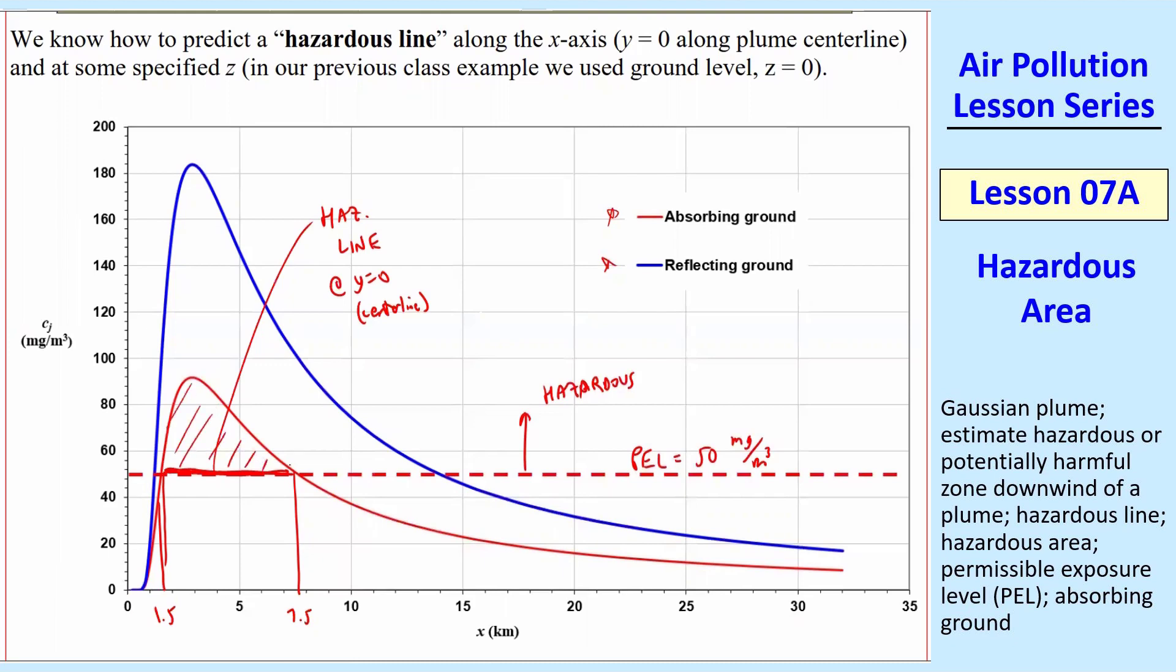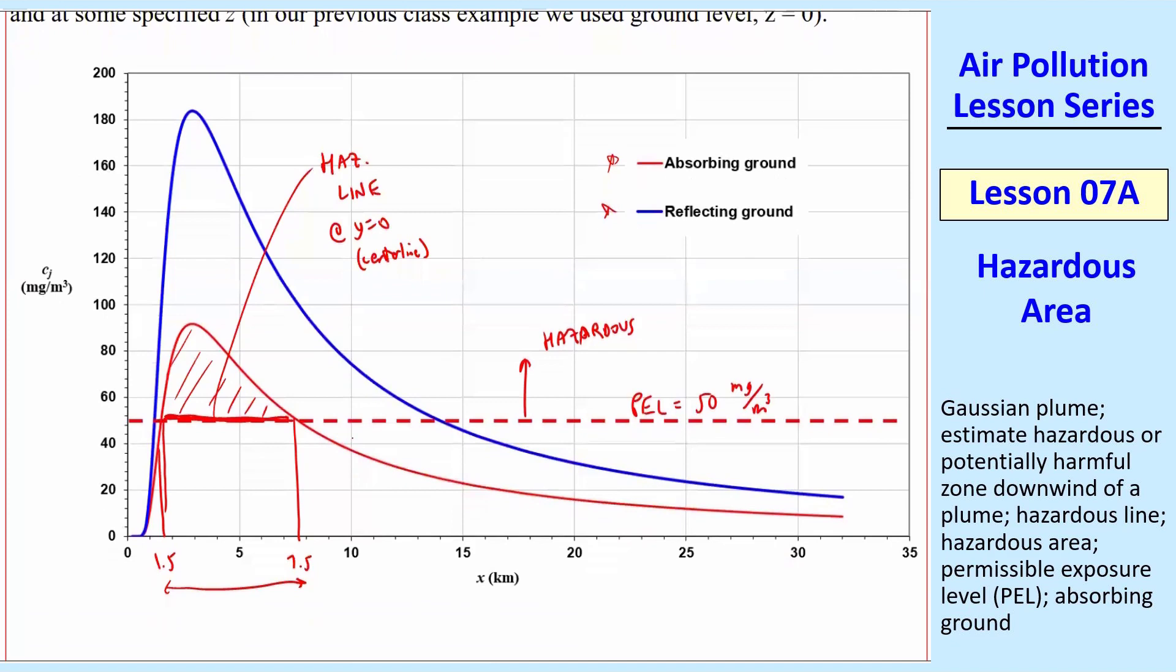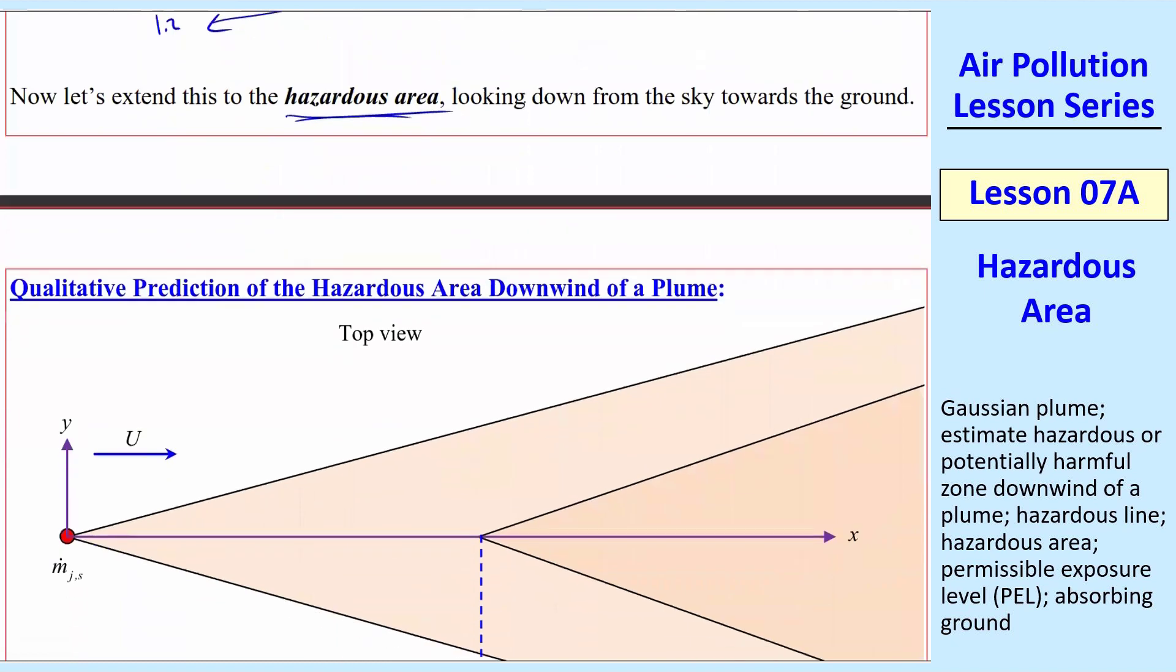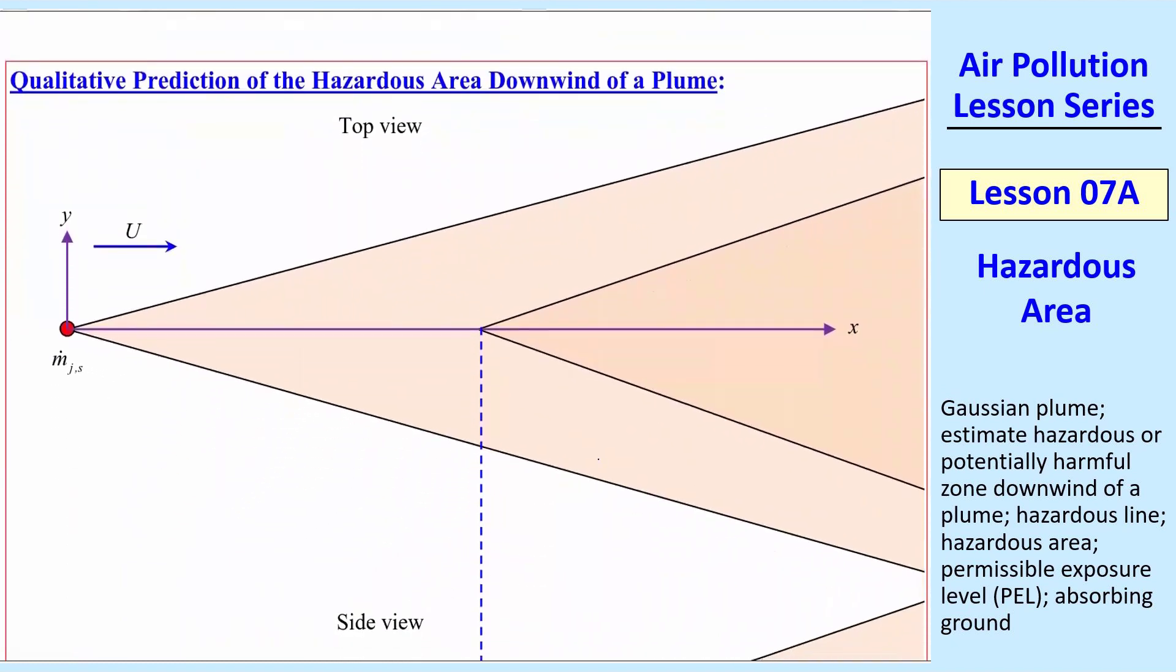And so we can define anything above this PEL as the hazardous zone or hazardous area. If you're on the x-axis at y equals zero, they're on the center line of the plume. We can define a line. Let's do the absorbing ground case here. This line, which would be between about 1.5 kilometers and about 7.5 kilometers. So we would say that this is a hazardous line at y equals zero. In other words, in the center line of the plume. That's easy to do.